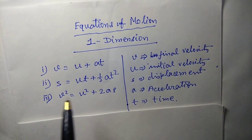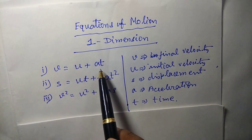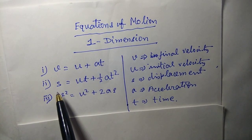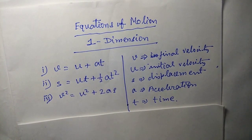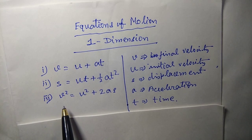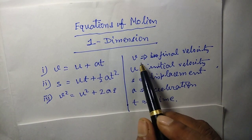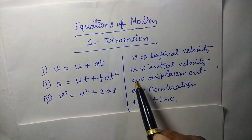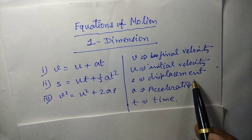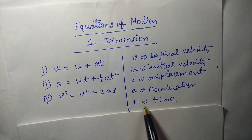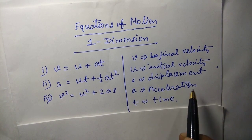The equations are: first equation is v equals to u plus at. Second equation is s equals to ut plus half at square. Third equation, v square equals to u square plus 2as, where v is the final velocity, u is the initial velocity, s is the displacement of the body in time t, and a is the acceleration with which the body is moving.